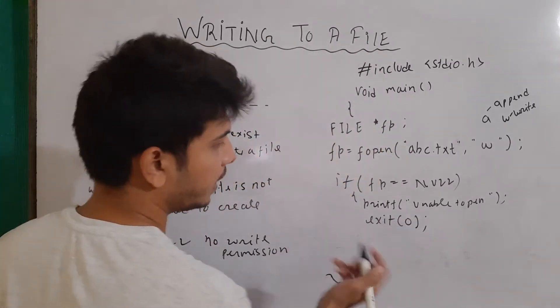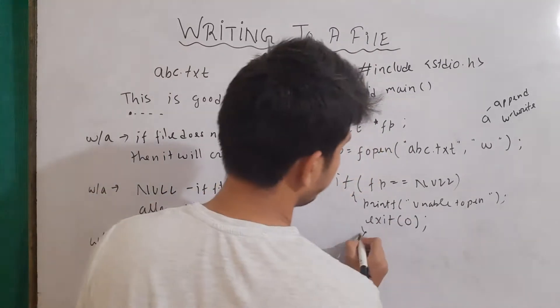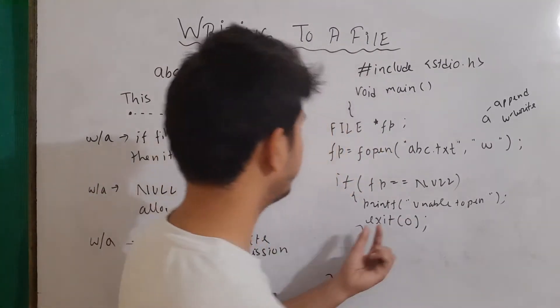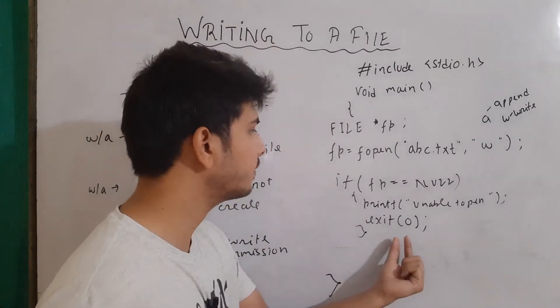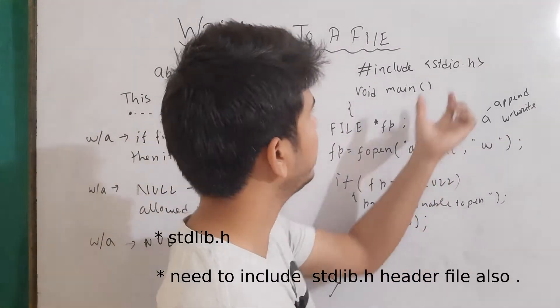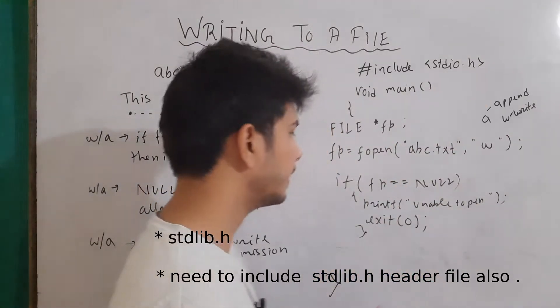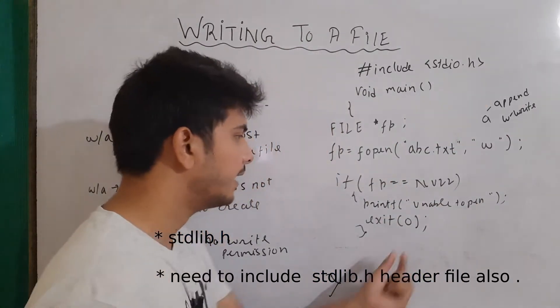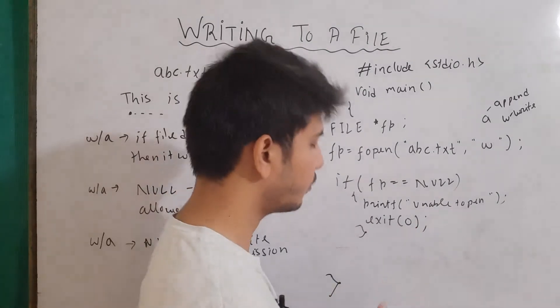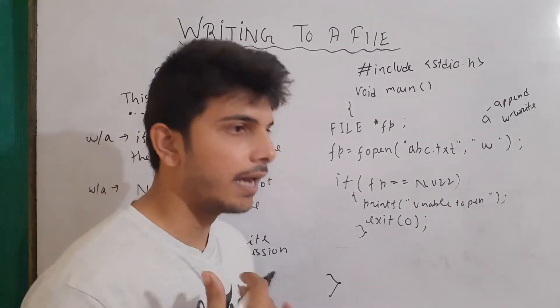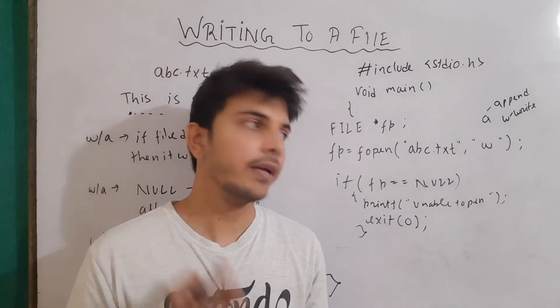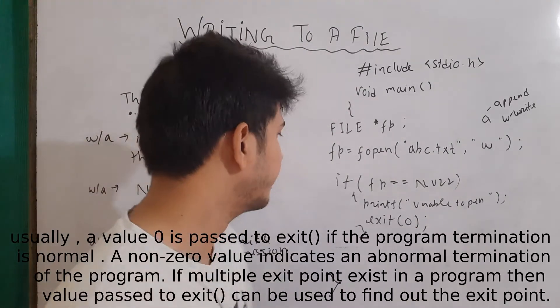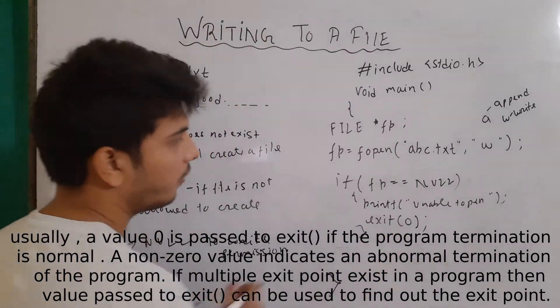Whenever you want to terminate a running program, you can write exit(0). The exit function is defined in the header file, and zero means that the program is executed or terminated without any errors. So this function you can use.